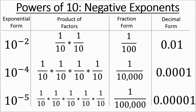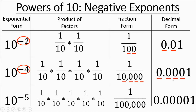Here are some cool tricks with these. For an exponent of negative 2, there are two zeros in 100, and two zeros total in the decimal form including the zero in front of the decimal point. For an exponent of negative 4, the fraction is 1 over 10,000 — four zeros — so it's basically 1 over 10 to the fourth. For the decimal, there's a total of 4 zeros including the zero in front. Same with 10 to the negative 5: five zeros in all the answers — five zeros after the 1 in the fraction, and five zeros total including the one in front of the decimal.